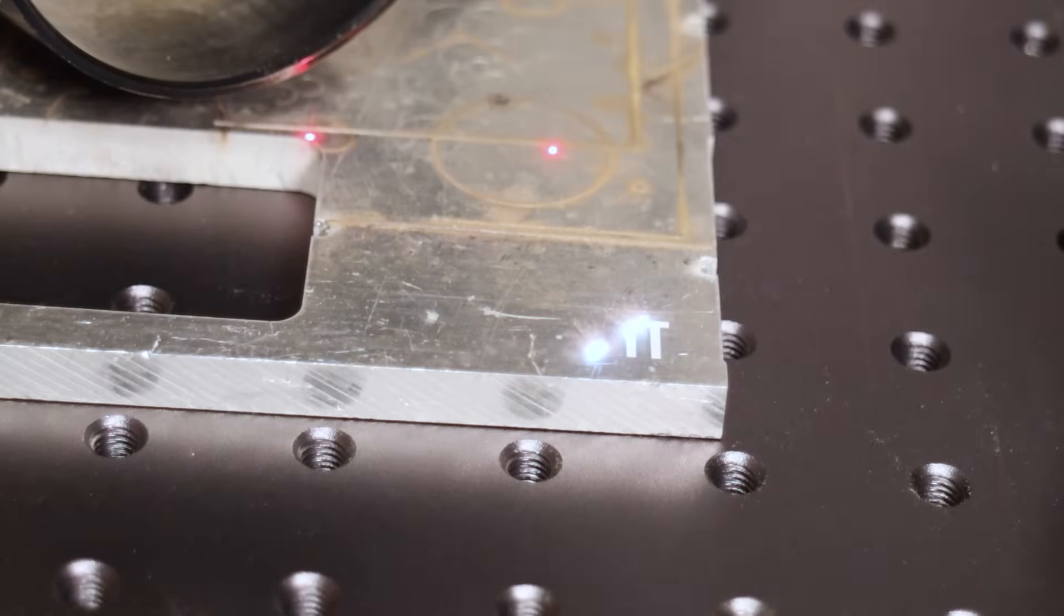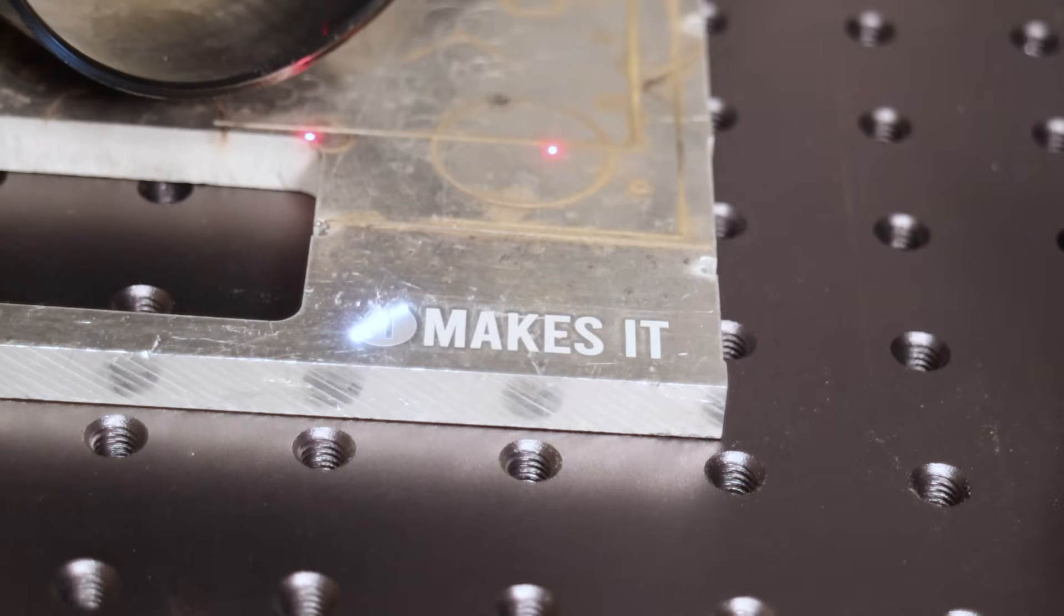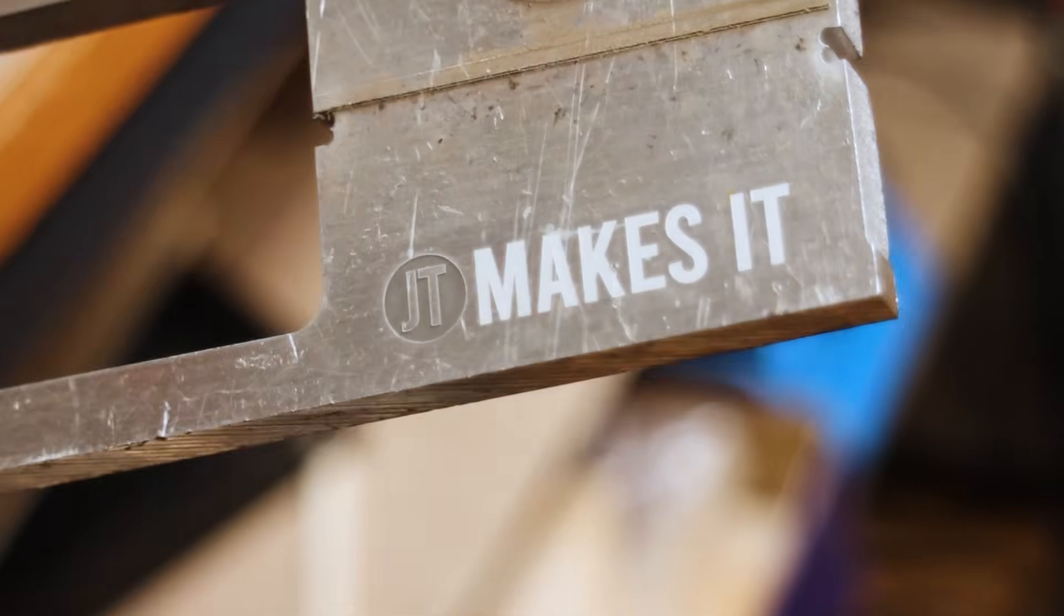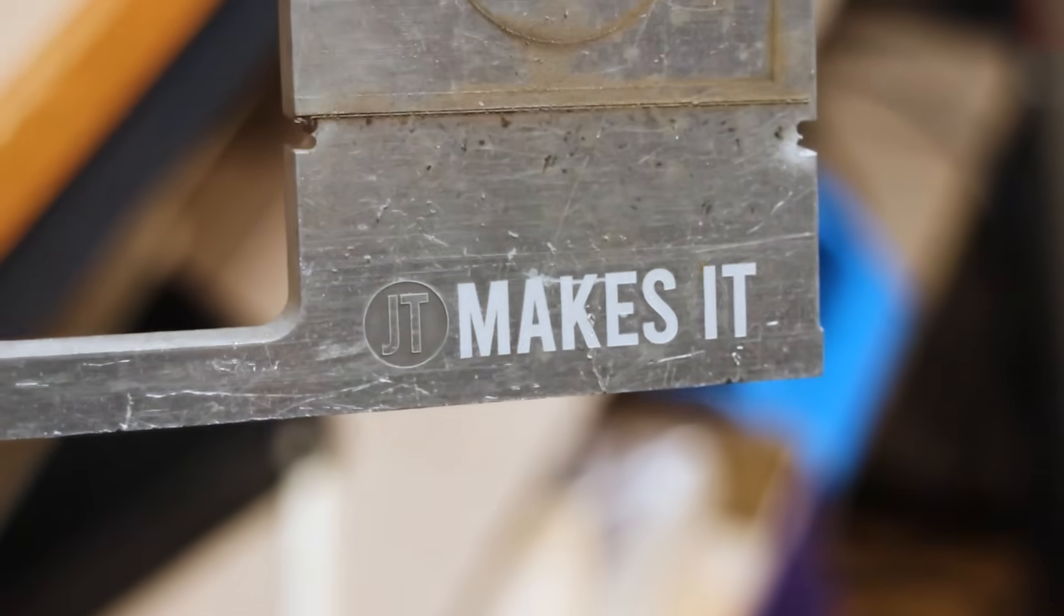While working with aluminum, I also tested different engraving effects. Weaker lasers can easily achieve white engravings, but they often struggle to produce dark engravings on raw aluminum. However, this was no issue for the 100W CommMarker Titan 1.